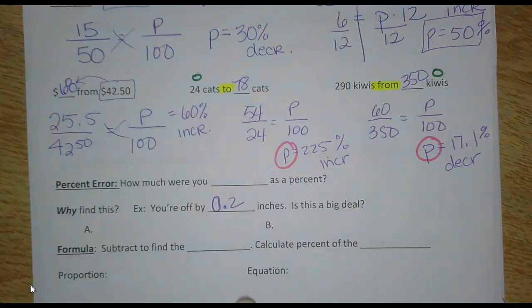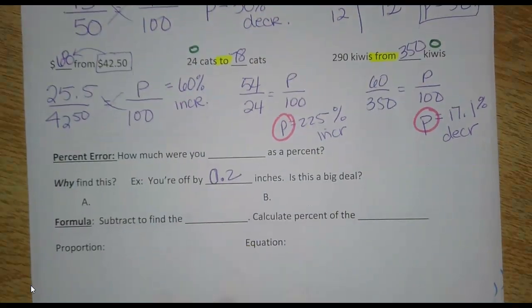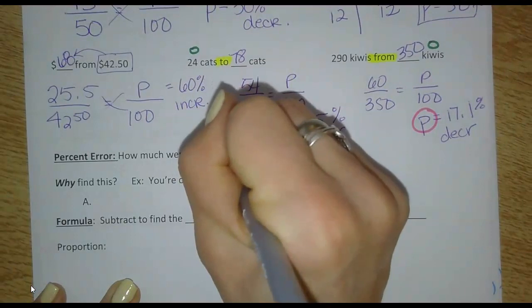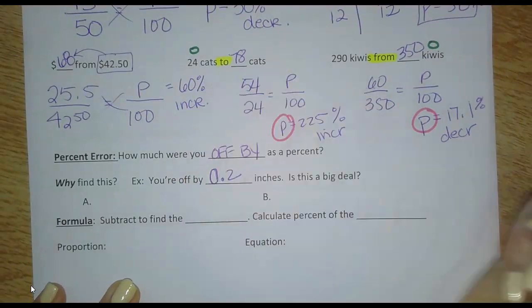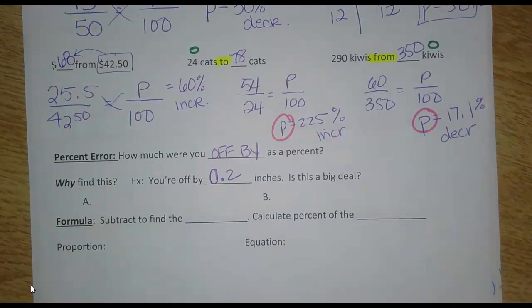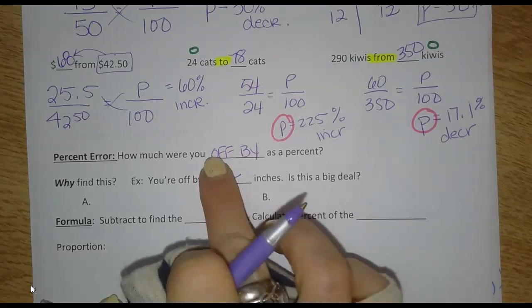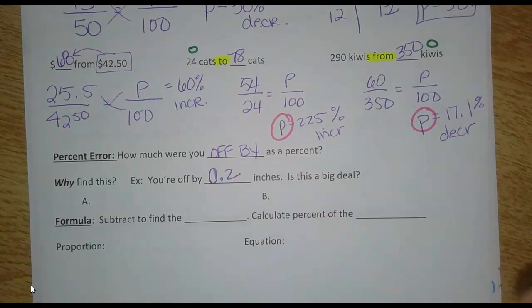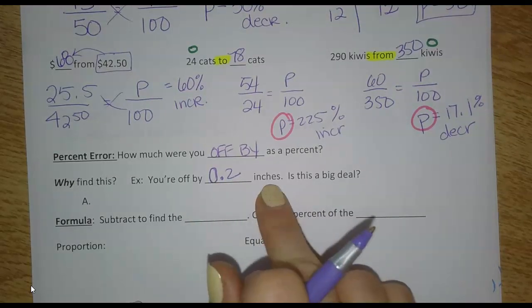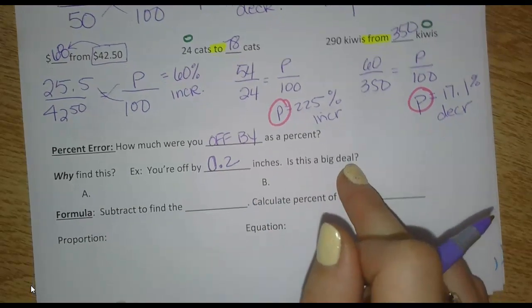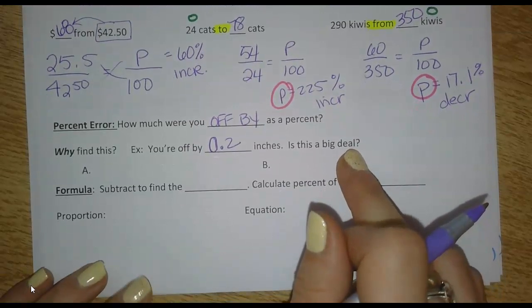So let's move on to percent error. This is telling you how much you were off by as a percent. So these kinds of problems will say you estimated one number, but it was actually something else, or you thought it was this much, but it turned out to be that much. So it's telling you how far you were off as a percent. So why is this important? Let's say you're off by 0.2 of an inch, two tenths of an inch. Is this a big deal? Well, here's our two cases again.